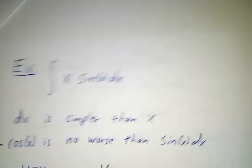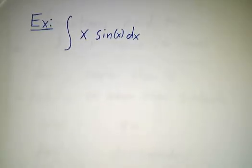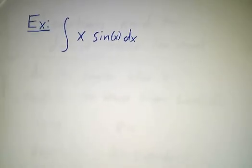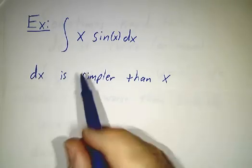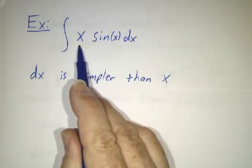Okay, let's try another one. In this example, we start off with x sin(x) dx. So the question is, what do we want to make u and what do we want to make dv? Now, in this case, you notice that if you differentiate x, it becomes simpler. The derivative of x is just 1. That's simpler than x.